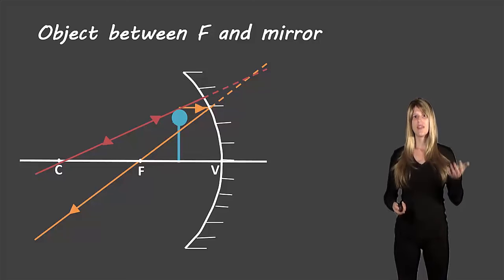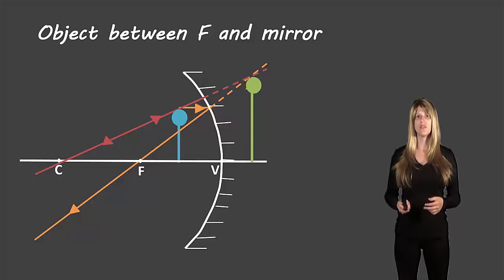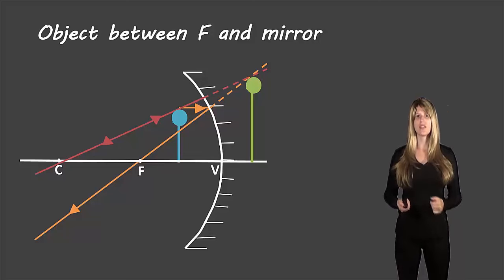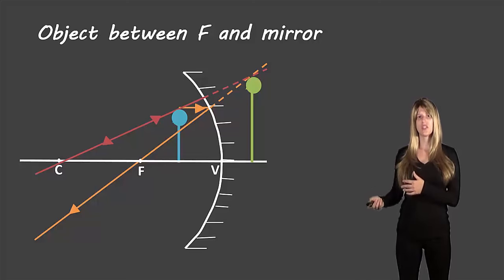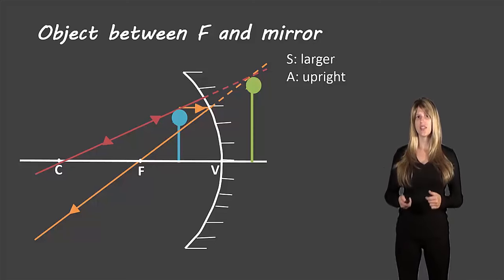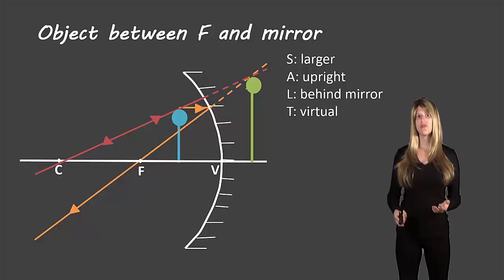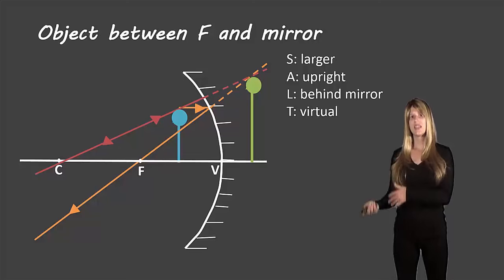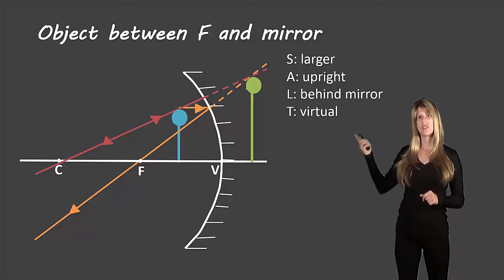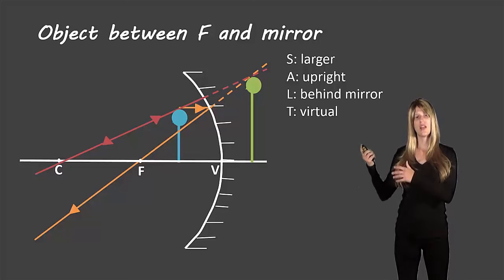Wherever those extended lines cross is the top of the balloon for our image, since the incident rays started at the top of the balloon of the object. For the object, the string of the balloon went straight down to the principal axis, so our image line goes straight down to the principal axis as well. The image is on the opposite side of the mirror — it's larger, upright, and behind the mirror, making it a virtual image. Because it's on the other side, light cannot actually reach there. I drew those lines as dashes to indicate where light appears to come from, since light doesn't actually pass through the mirror.